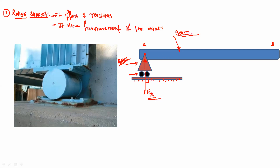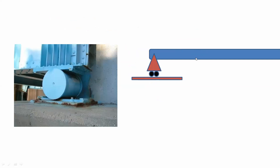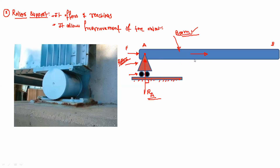When a roller support is connected to a beam, it allows free movement in the horizontal or vertical direction. If we apply a force on beam AB in the horizontal direction, the roller support offers no resistance to the force, so there will be movement of beam AB in the positive X direction — this is the free movement, meaning no resistance to horizontal motion.